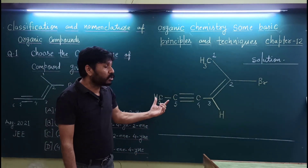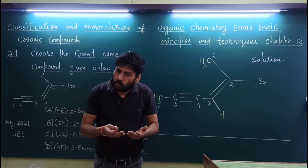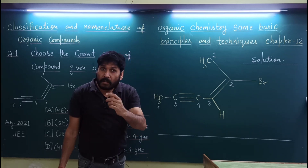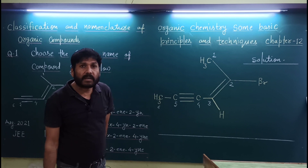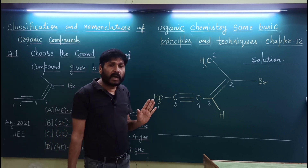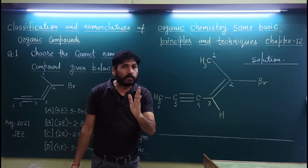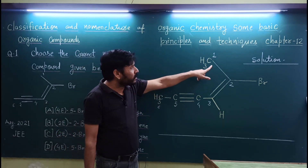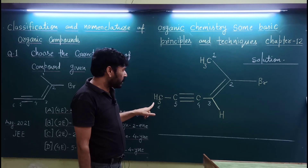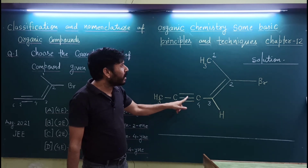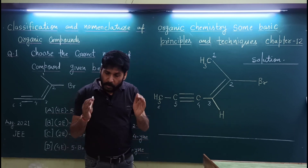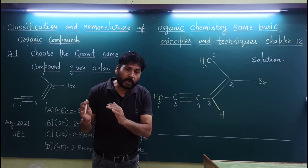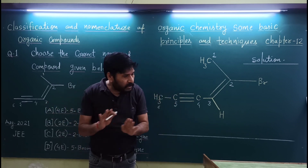चार option नीचे दिये गए हैं, लेकिन option देखने की जरूरत नहीं है — पहले हम question solve करेंगे फिर देखेंगे कौन सा option match करता है। Longest chain select करने का simple rule है: वो chain select करो जिसमें सबसे ज़्यादा carbon atom हों। इसमें सबसे ज़्यादा 6 carbon atom हैं। Numbering करते हैं: 2 number पर double bond है, और 4 number पर triple bond है।